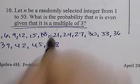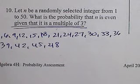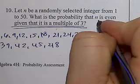So I wrote down all the multiples of 3, excuse me, all the multiples of 3 up to 50. Of these multiples of 3, I go back and go, how many of them are even?